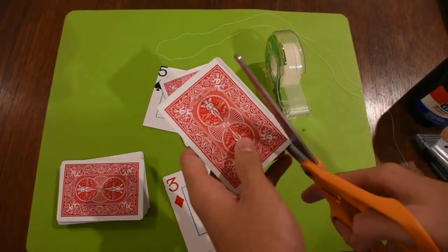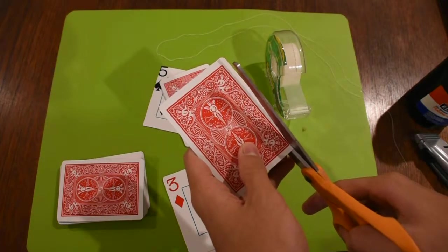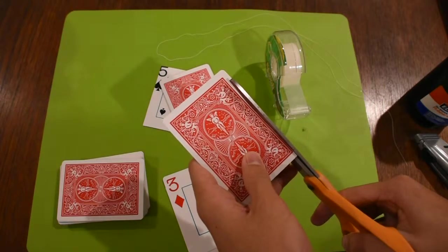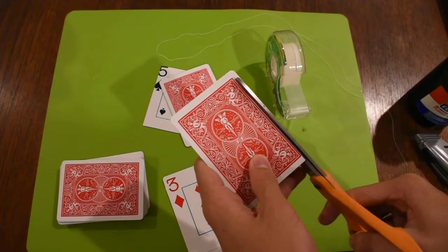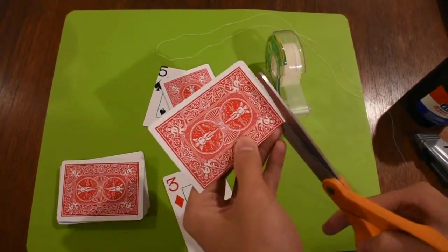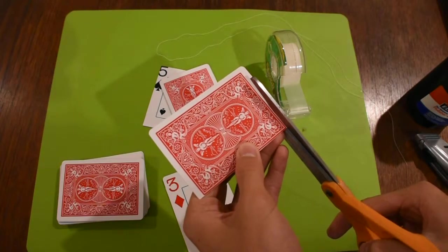And you're going to want to start off by cutting this red rectangle out. It doesn't have to be perfect, but just you want to cut off the white border. And I'll fast forward it so you don't have to watch this.